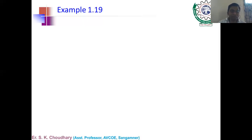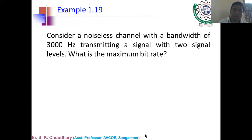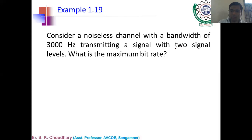Now let's look at some numericals based on channel capacity for a noiseless channel. Example 1: Consider a noiseless channel with a bandwidth of 3000 Hz, transmitting a signal with two signal levels. What is the maximum bit rate?